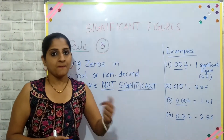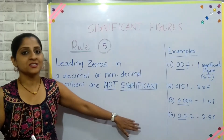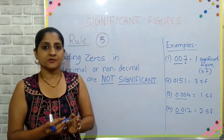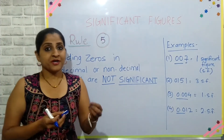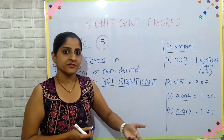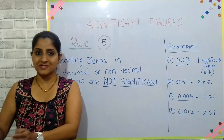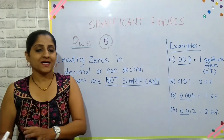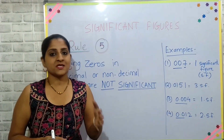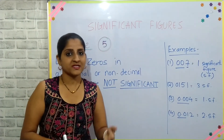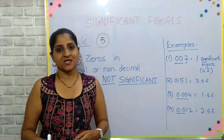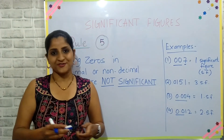In this series of five videos we have now learned all five rules of significant figures. But the real challenge is applying these rules when rounding a number to a given number of significant figures. In the next few videos I'm going to pick questions from past papers of IGCSE Mathematics and explain how to apply all five rules when rounding. So stay tuned to my channel for further videos and further learning.